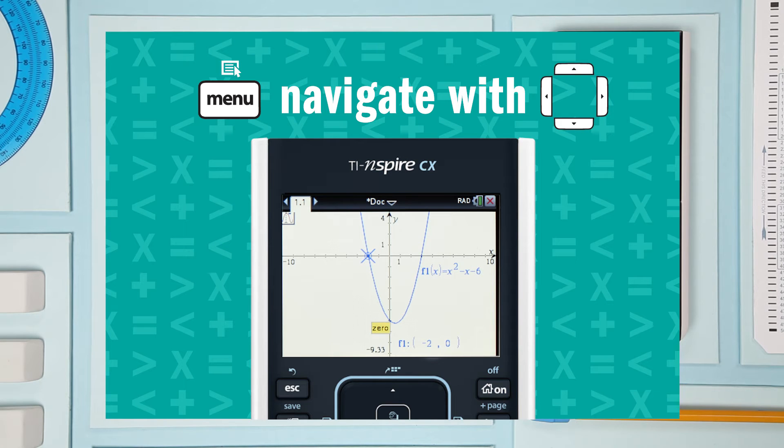There's one. On the screen, the root is called a zero. Press enter to mark it, then trace to the other zero.